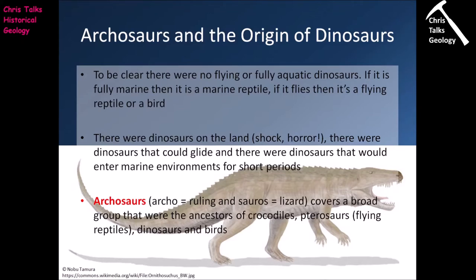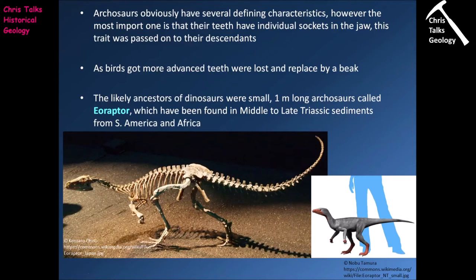The ancestor species for the dinosaurs is a group called the archaeosaurs. 'Archaeo' means ruling and 'saurus' means lizard. It covers a broad group that were the ancestors of crocodiles, pterosaurs — who are flying reptiles — dinosaurs, and eventually birds. You can see a picture of an archaeosaur in the background, and it has some pretty crocodilian features. The most obvious defining characteristic is that their teeth have individual sockets in the jaw — a trait passed on to crocodiles, dinosaurs, birds, and pterosaurs.